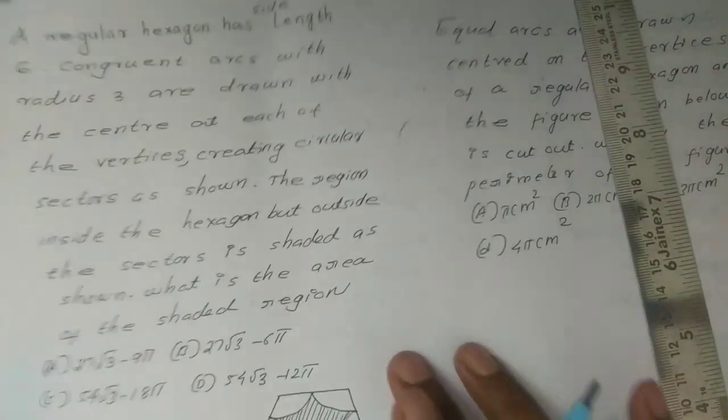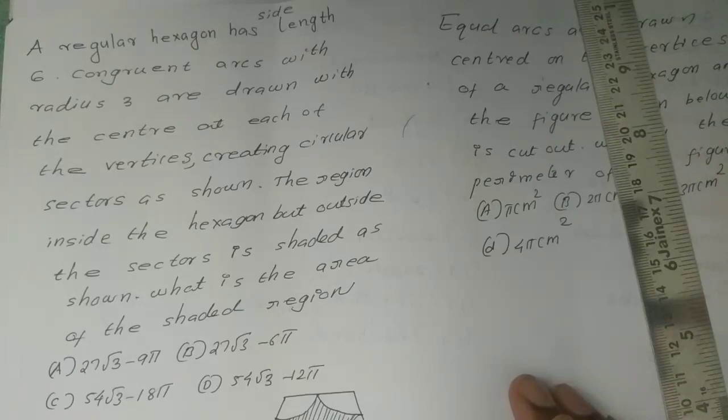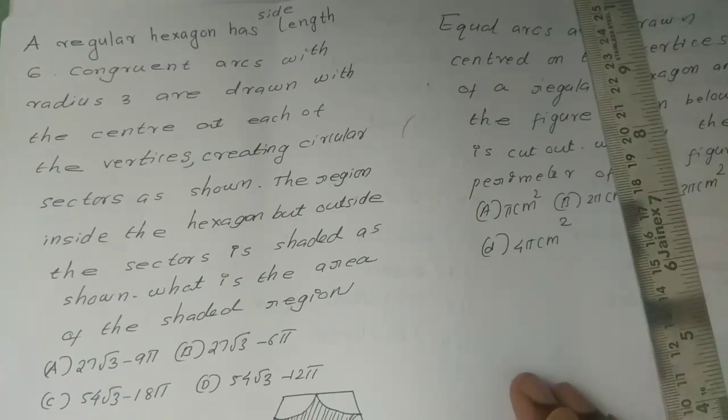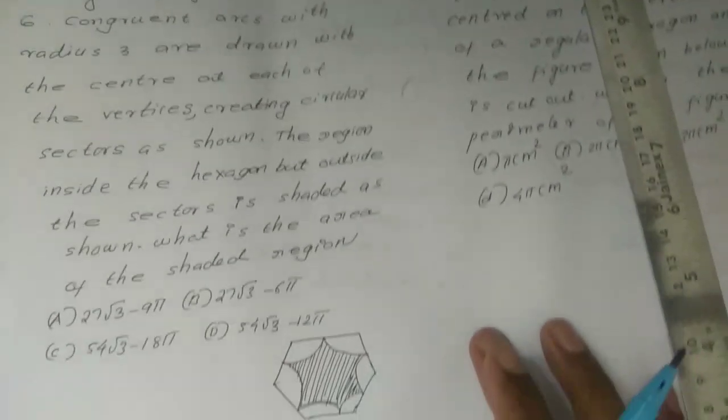A regular hexagon has side length 6 cm. Congruent arcs with radius 3 cm are drawn with the center at each of the vertices, creating circular sectors as shown. The region inside the hexagon but outside the sectors is shaded as shown. What is the area of the shaded region? This is the question.